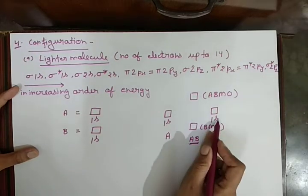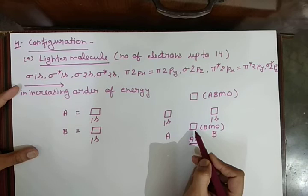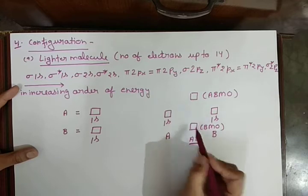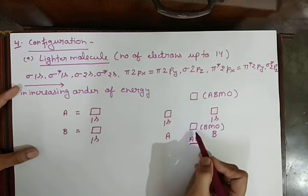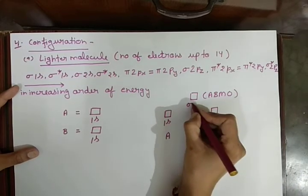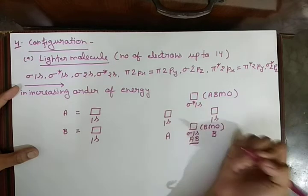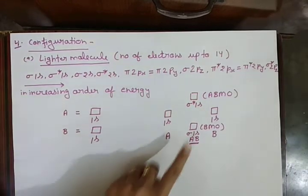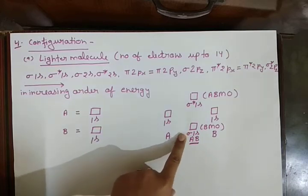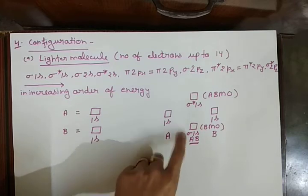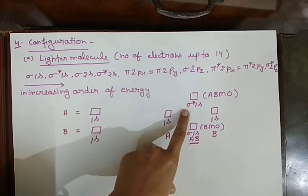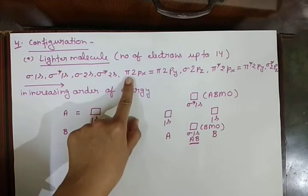Since both are 1s orbitals, the molecular orbitals formed also need nomenclature. If s orbitals overlap, the resulting orbital is also named s. The lower energy orbital is called sigma 1s and the higher energy orbital is sigma star 1s — anti-bonding is represented with a star. So all lower energy orbitals are represented with simple sigma, and all higher energy orbitals are represented with sigma star. The same condition applies to p orbitals when they overlap.